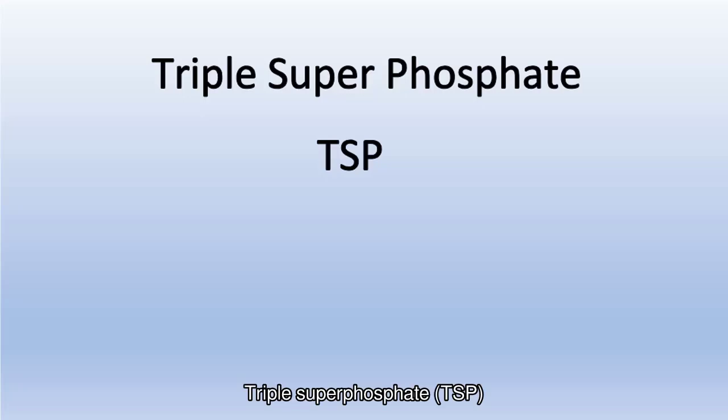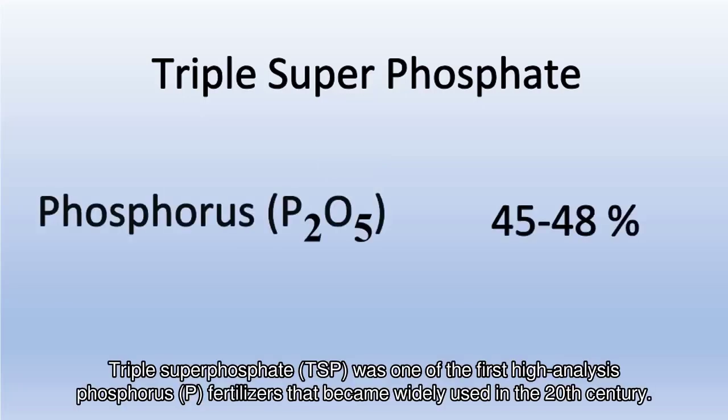Triple Superphosphate, TSP, was one of the first high-analysis phosphorus (P) fertilizers that became widely used in the 20th century.